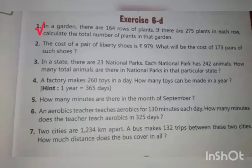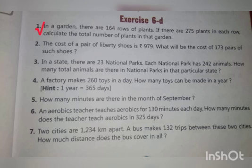Our question is: in a garden there are 164 rows of plants. If there are 275 plants in each row, calculate the total number of plants in that garden.